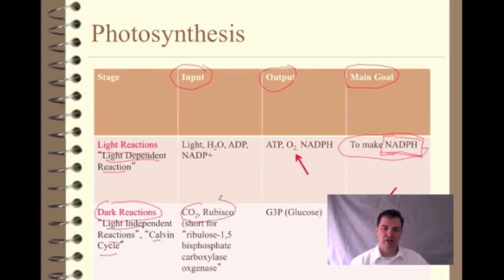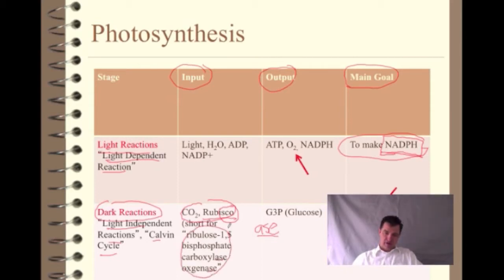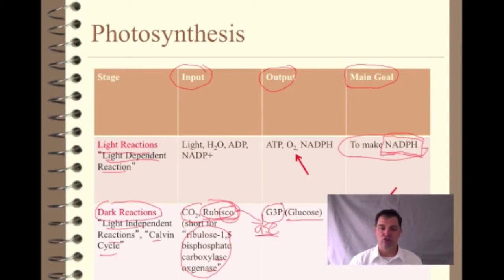In the dark reactions, we're going to take CO2 and use this enzyme called Rubisco. This is a little tricky because usually when you see an enzyme, you're used to seeing it end in the word -ase. Rubisco is short for ribulose 1,5-bisphosphate carboxylase-oxygenase — so it is an enzyme, but that's such a long term we just shorten it and call it Rubisco. And we're going to get out of that a molecule called G3P. G3P is essentially glucose — if you can make G3P, you can make glucose.